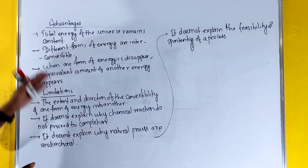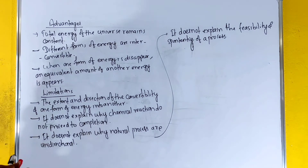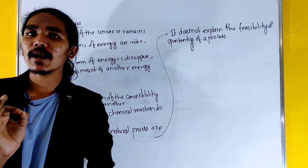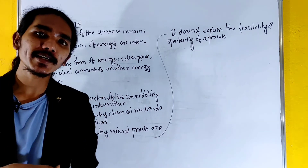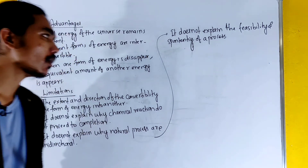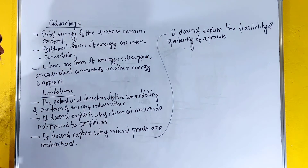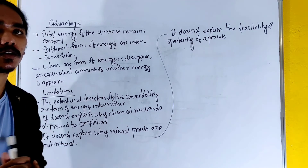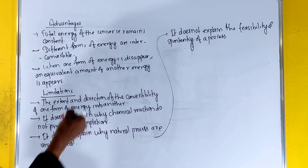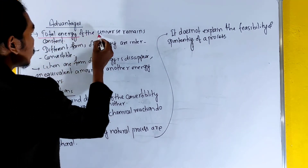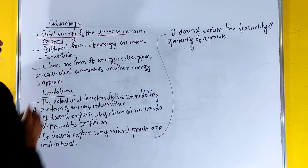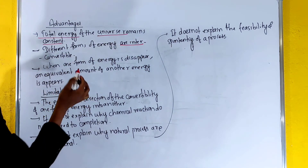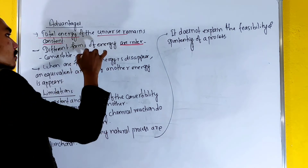Advantages of the first law of thermodynamics: the total energy of the universe remains constant. The statement is that energy is neither created nor destroyed; energy can only be converted from one form to another. Different forms of energy are interconvertible.